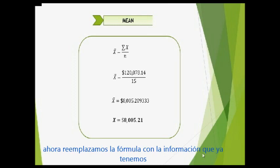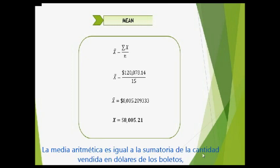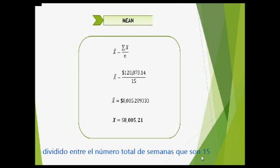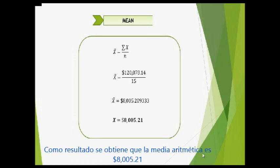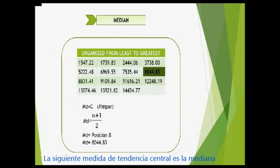Now we are going to replace the formula with the information we already have. We say that the mean is equal to the sum of the amounts of dollars in tickets sold, divided by the total number of weeks, which in this case is 15. As a result, this gives us a mean of $8,005.21.